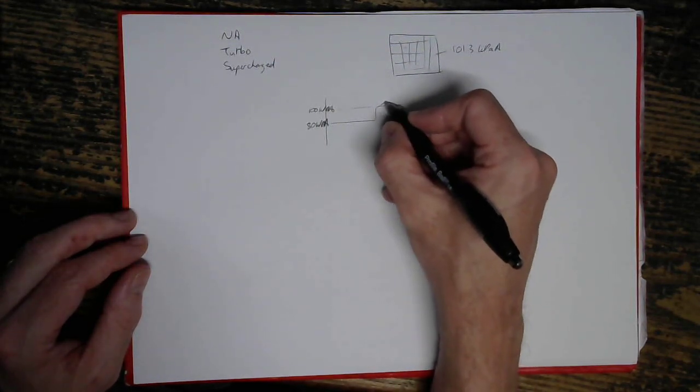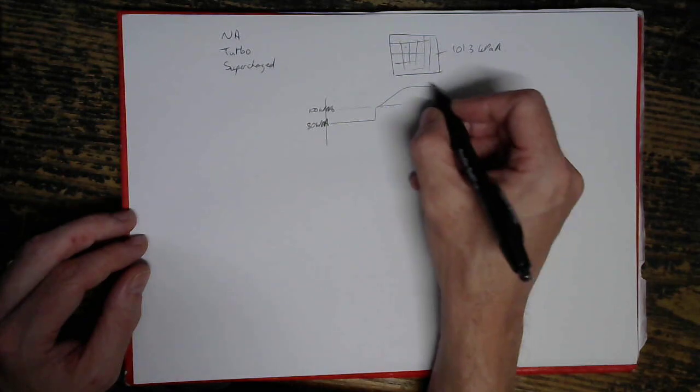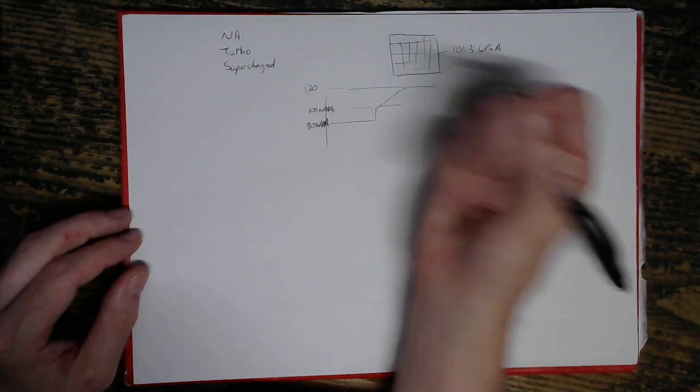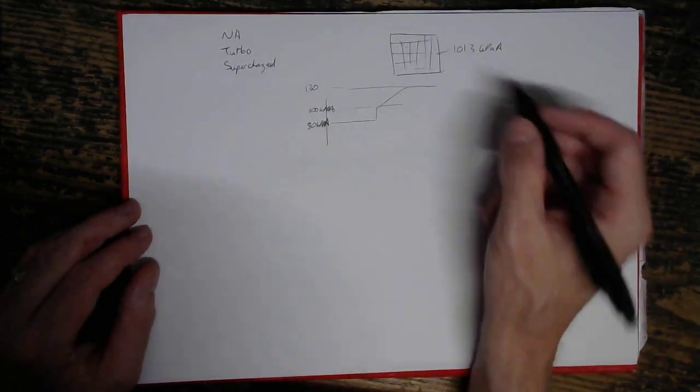Now, as the turbo spins up, it's going to increase and maybe you'll get up to, say, 130 kPa or depending on how big your turbo is and the speed you're doing. But this happens over a relatively long period of time compared to this initial transition event here.